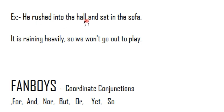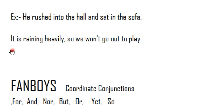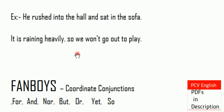Example sentences: 'He rushed into the hall and sat on the sofa.' And: 'It is raining heavily, so we don't go out to play.' In both sentences, coordinate conjunctions 'and' and 'so' are used.